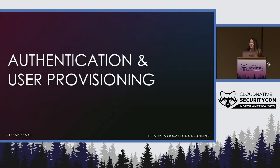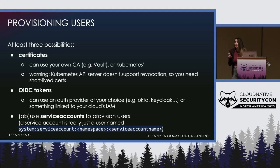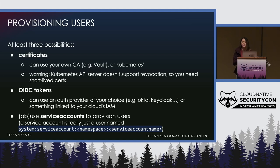First we're going to talk about authentication and provisioning users. Kubernetes is very flexible here. You can use TLS certs, maybe with your own CA or not. But since the Kubernetes API server doesn't support revocation, you should definitely use short-lived certs — try to get a new one every hour or something like that. You could also use OIDC tokens with any OIDC provider, like Dex, Keycloak, or SaaS like Okta. That in turn can plug into your cloud's IAM, so you can map your cloud provider users to your Kubernetes users. You can also use service accounts to provision users as well.